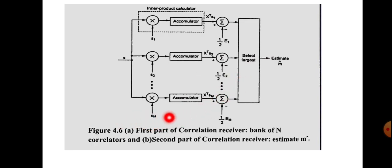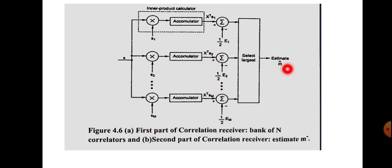To summarize: the first part of the correlation receiver is the bank of N correlators, and the second part is the maximum likelihood decoder which calculates the estimate m-cap. That is all about this topic. Thank you.